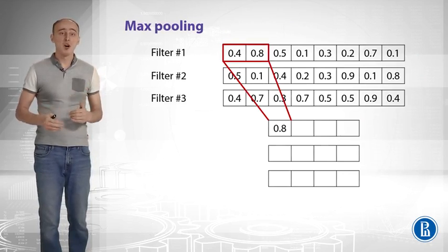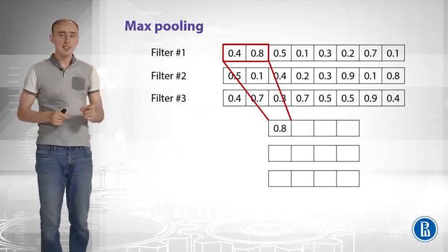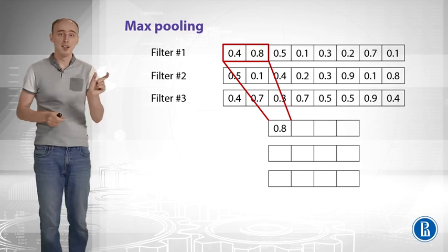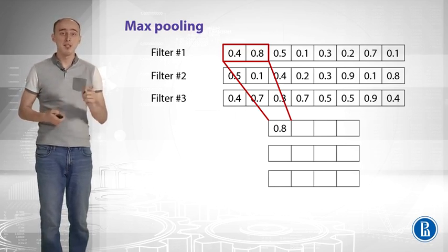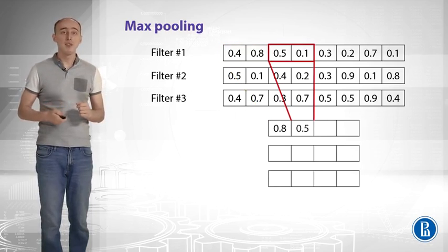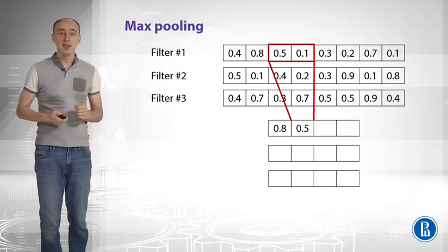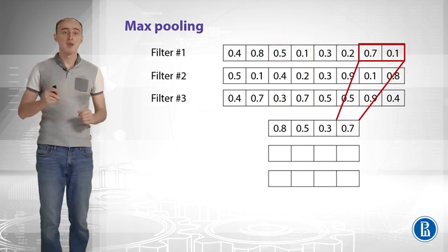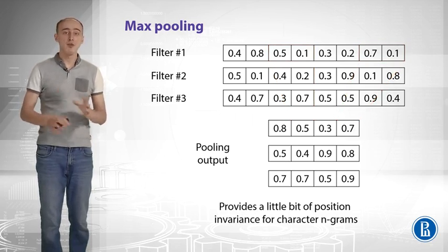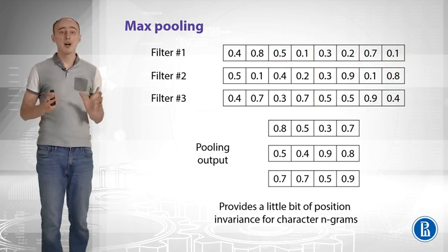Let's see how pooling is applied. Let me remind you that it works on filter level. It takes neighboring values and takes the maximum of them. This time it's 0.8. Then we move that window with a stride of 2, and we take the maximum of those values as well. We do it all to the end and for all the filters we have. This is our pooling output.